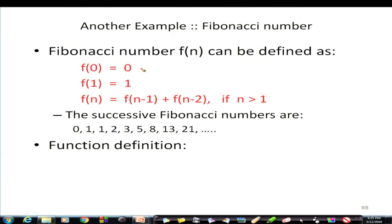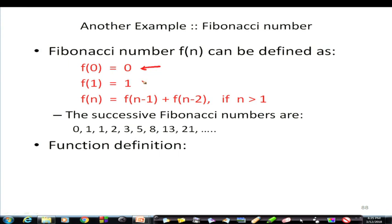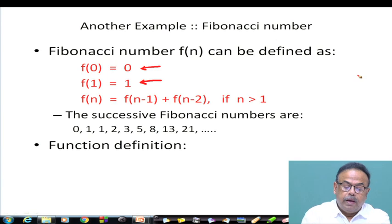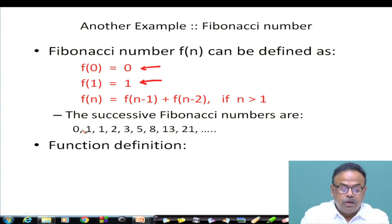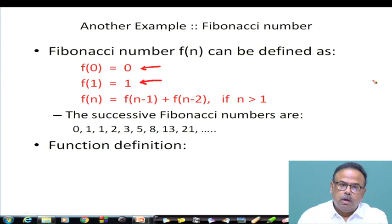Another very common and easy example of recursion is Fibonacci numbers. The Fibonacci sequence is defined as: the 0th Fibonacci number is 0, the next is 1, and all subsequent ones are the sum of the previous two. So the sequence goes: 0, 1, 1, 2, 3, 5, 8, 13, 21, and so forth.